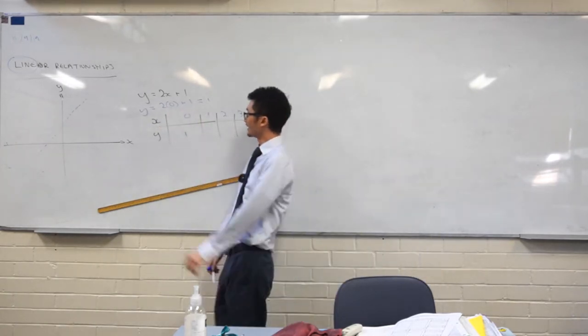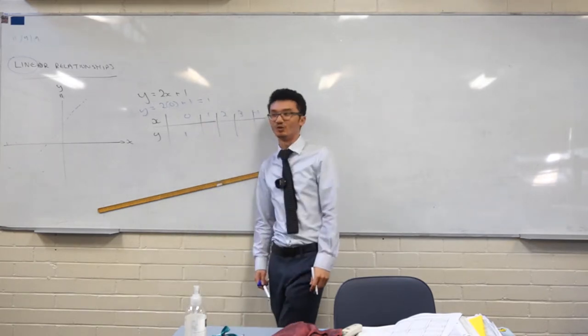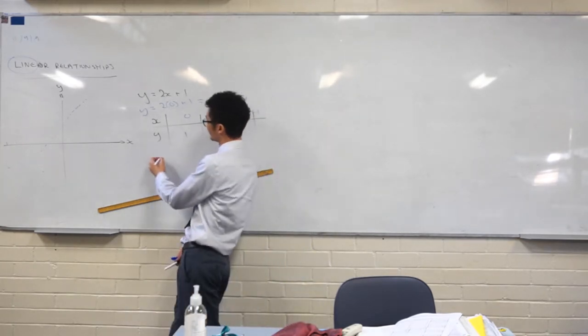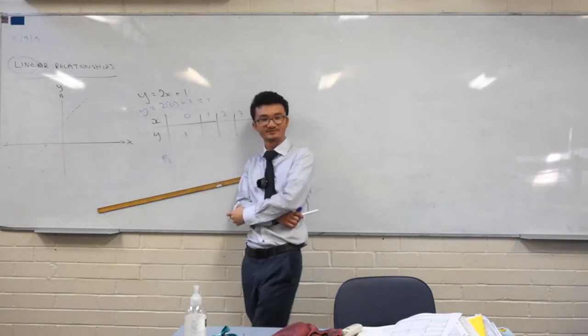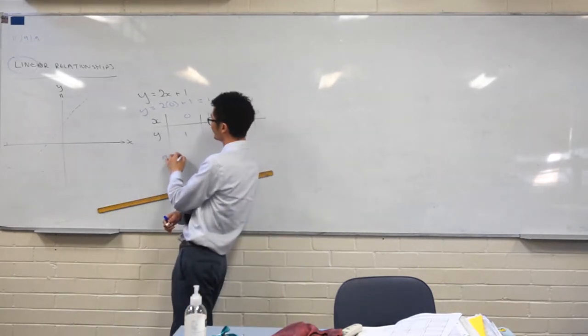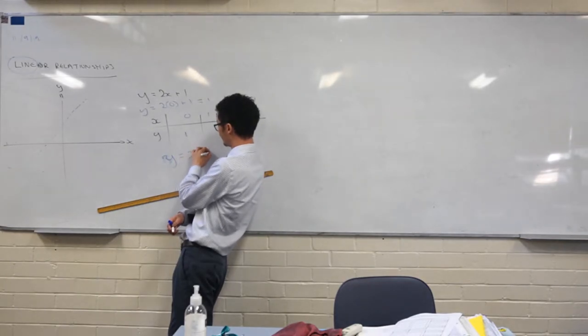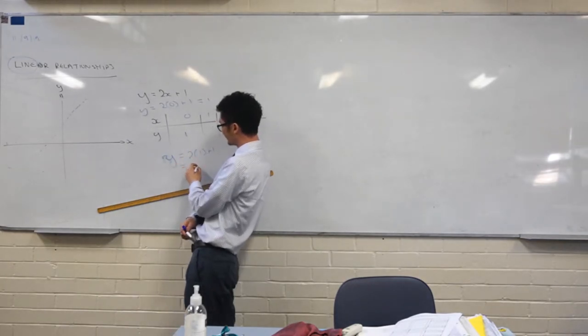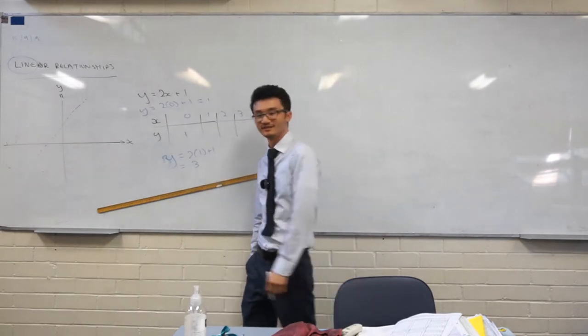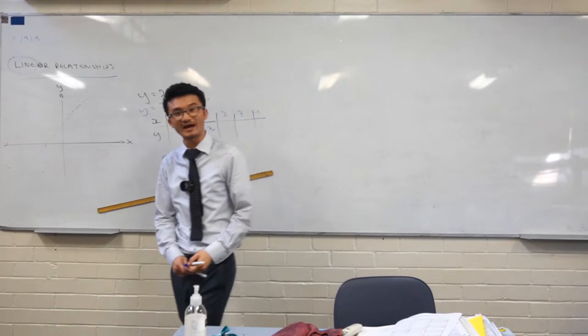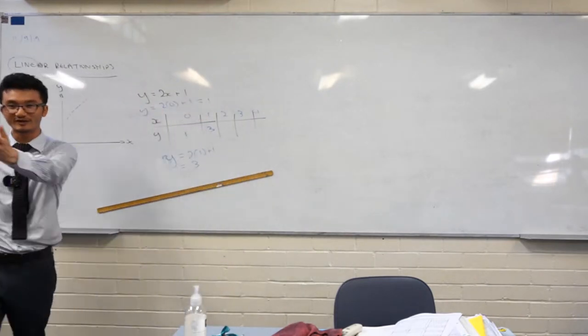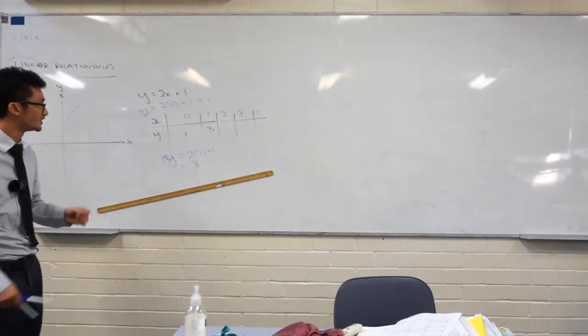Let's try the next one together. When x is equal to 1, what are we going to get? Yeah, 2 times 1 plus 1. What's that going to be? 3. There you go. Where am I going to put that? After a certain point, you might notice there's a pattern and we looked at this pattern last lesson. What was the pattern, Riley? It goes up by 2 each time.